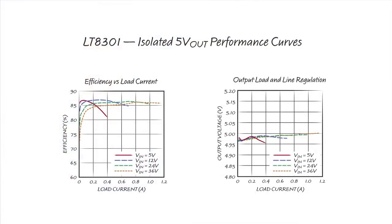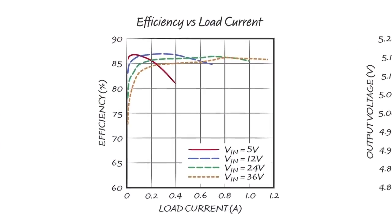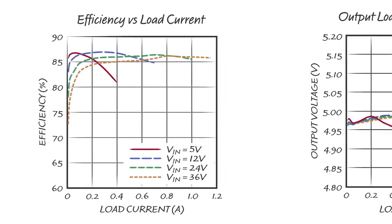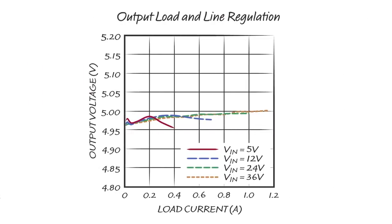The graph on the left shows the power efficiency versus load current. At 12-volt input, its power efficiency stays above 82% all the way from minimum load to full load and peaks at 87%. The graph on the right shows the output load and line regulation. It is better than plus or minus 1% regulation across the full load and line range.